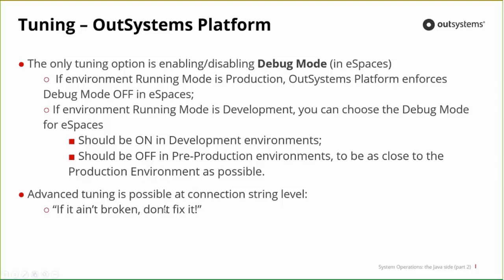Advanced tuning is also possible at the connection string level. You can go into the configuration tool and fine-tune the connection string — adding the number of pooled connections, the timeout, and several different types of settings. What we advise is: if it's working, don't try to fix it. Leave it as it is, because most of the time the fixes we make can create more harm than good.